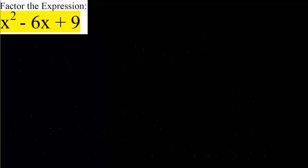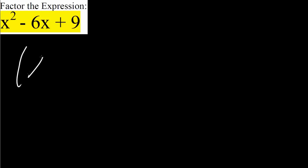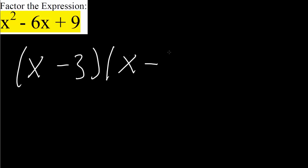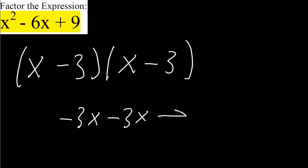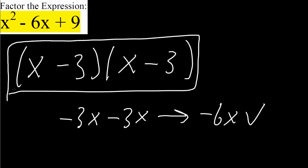For the fourth problem, we have x squared minus 6x plus 9. This is an easy one: it factors as (x minus 3) times (x minus 3). x times x is x squared, negative 3 times negative 3 is 9, and x times negative 3 plus negative 3 times x gives negative 6x in the middle. That's all we need to do for these problems.